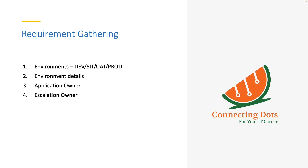Gather all the details based on the connector and application — for Salesforce, different details will be required. Next, ask for the application owner. You need someone to contact for requirements, and in the future, if something is required. Once an application is onboarded into an IGA product, there should be no changes to user data at the application side — if they do that, there is no point in onboarding.